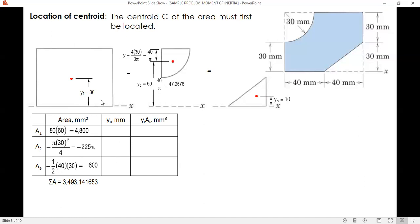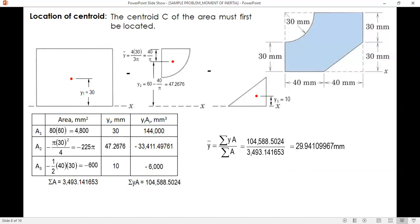And then we supply values. So y, we have 30, 47.2676, and then 10. And then get the product. Y times A. This one times this. And then 10 times 600 is 6,000. And then 1, minus 2, minus 3. The total is this. So after this, compute for the centroid or y-bar. So supply values. 104,588.5024 divided by total area. And y-bar is 29.94109967.